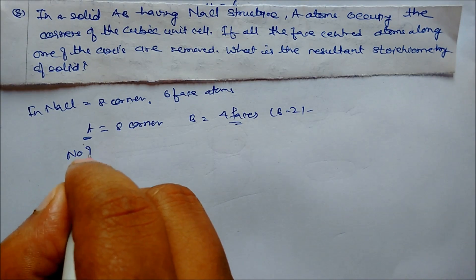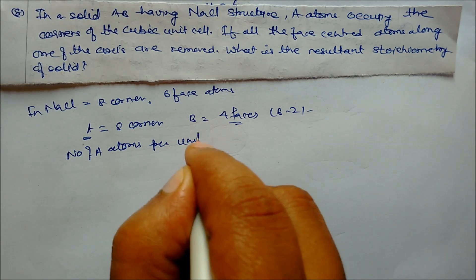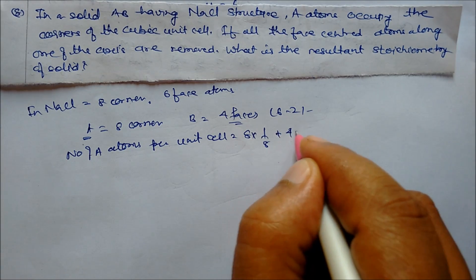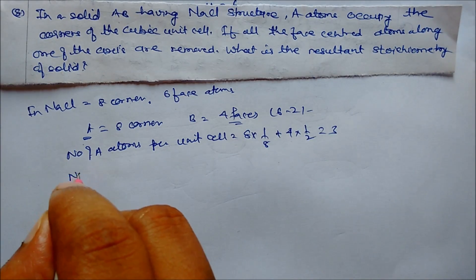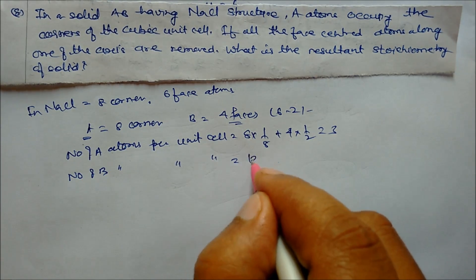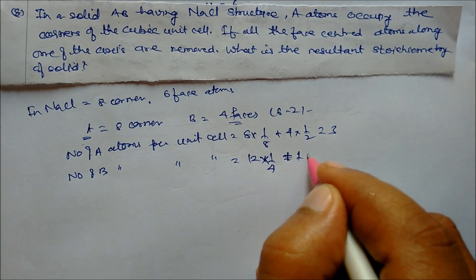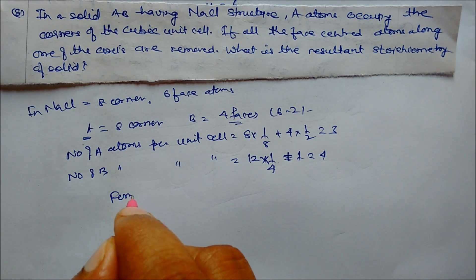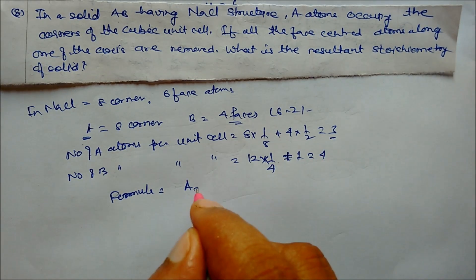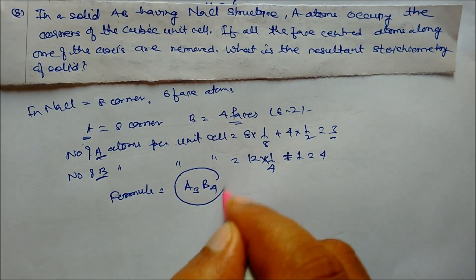A atoms: 8 corners × 1/8 = 1, plus 4 remaining faces × 1/2 = 2, giving total A = 3. B atoms: 12 edge atoms × 1/4 + 1 body center = 3 + 1 = 4. So the formula becomes A₃B₄.